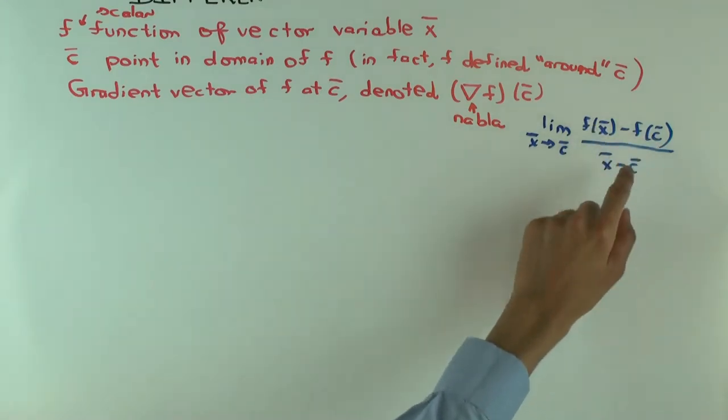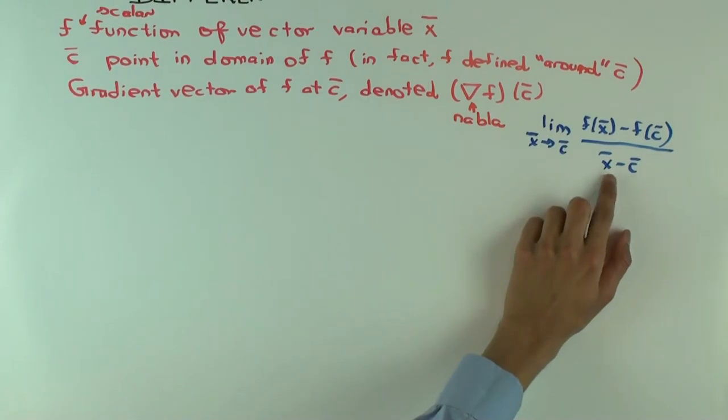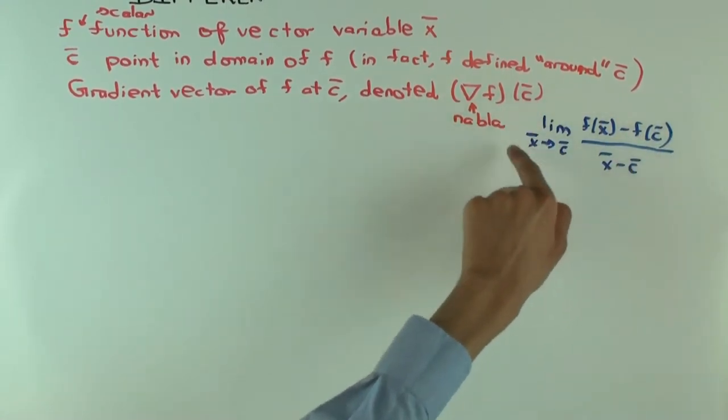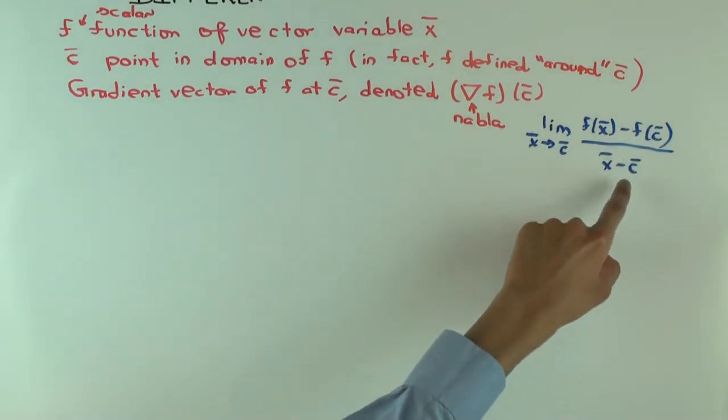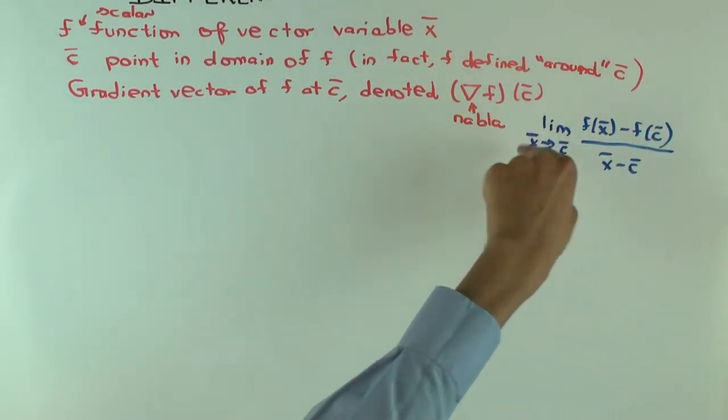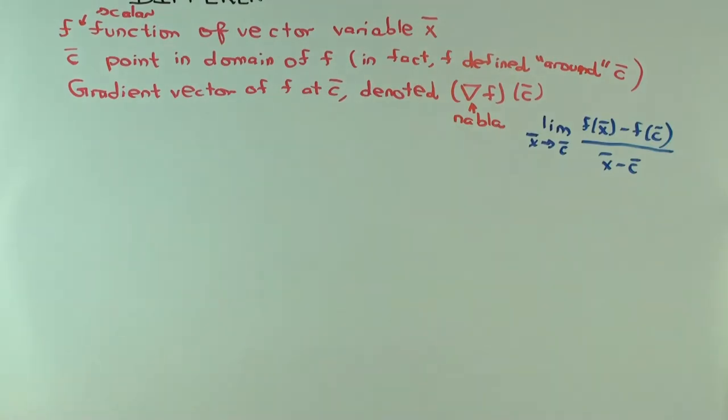What's the numerator? This is just a number. What's the denominator? It's a vector. Can you divide something by a vector? Maybe. No, you cannot divide things by vectors, right? So that's a problem. This is a naive thing you would like to do, limit of a difference quotient. But it doesn't quite work.